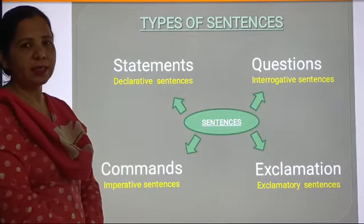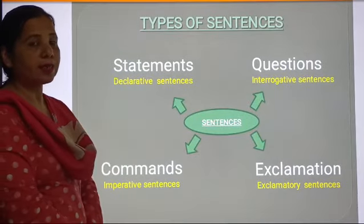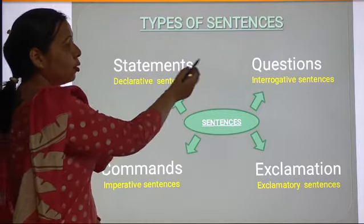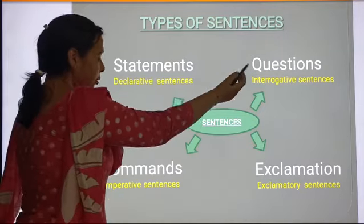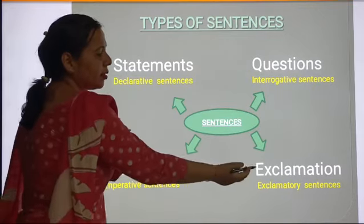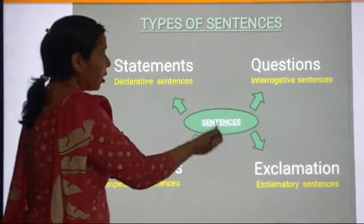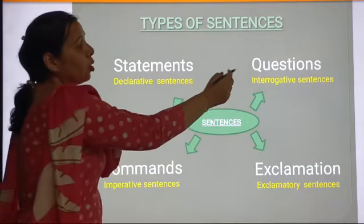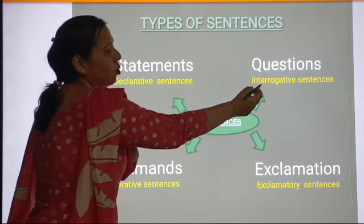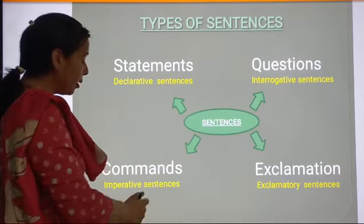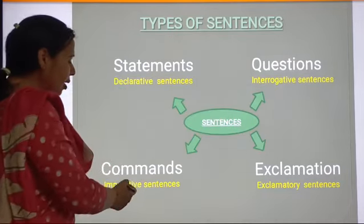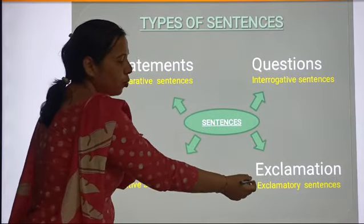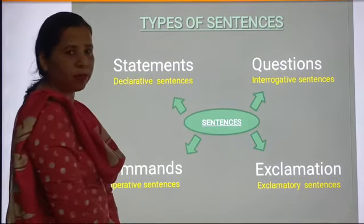Types of Sentences. A sentence has four types: Statement, Question, Command, and Exclamation. Statements are also called declarative sentences. Questions are called interrogative sentences. Commands are called imperative sentences. And exclamation is called exclamatory sentences.